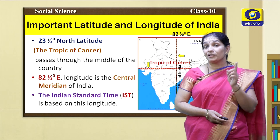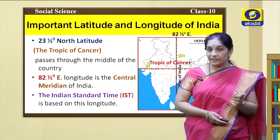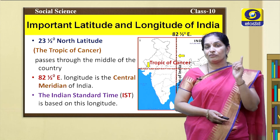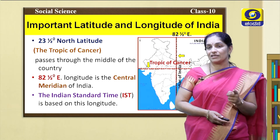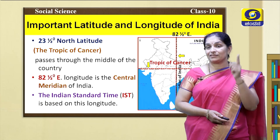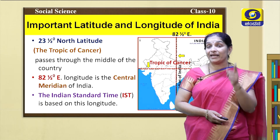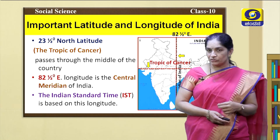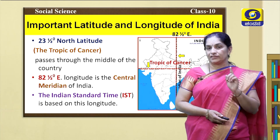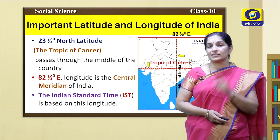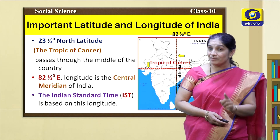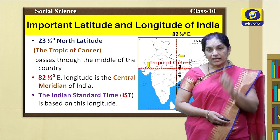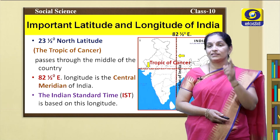The time is fixed on longitudes. It is called a meridian. Meri means mid, and dian means day. The places where the longitude passes all receive the sun's rays vertically at the same time, and it is midday — 12 noon. So the longitude is called a meridian. 82 and a half degrees east longitude is the central meridian of India, and the Indian Standard Time is calculated on the basis of this longitude.